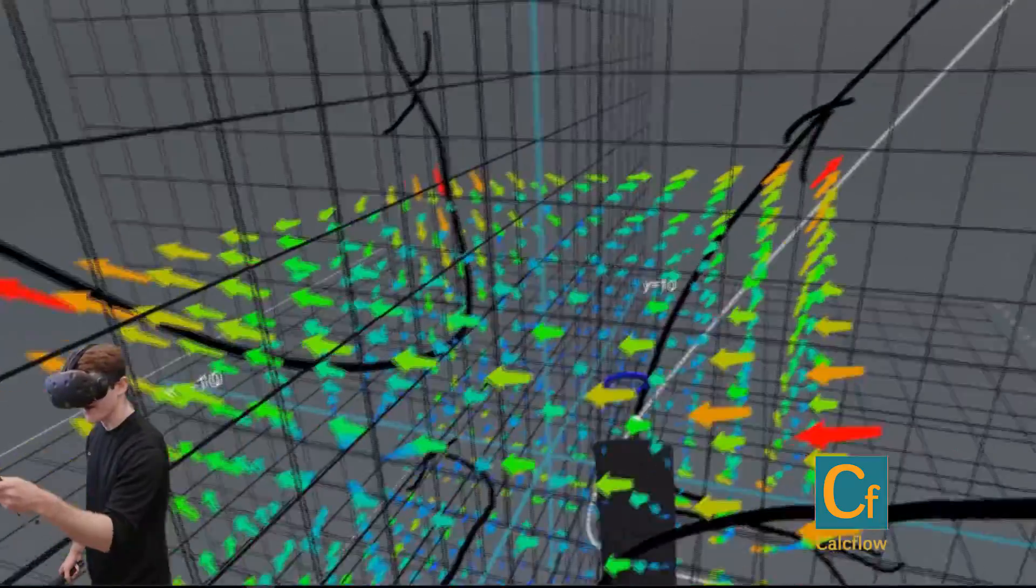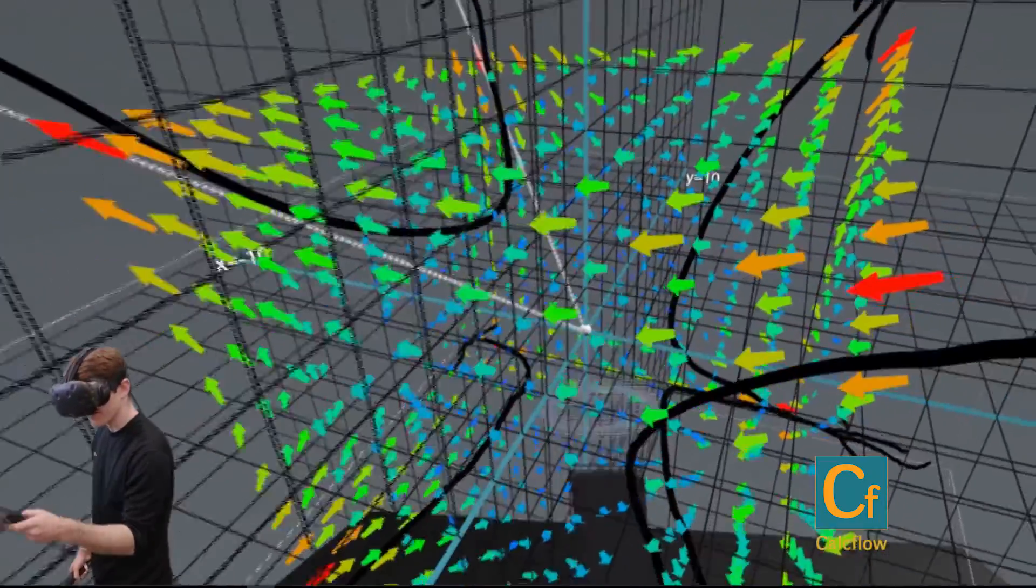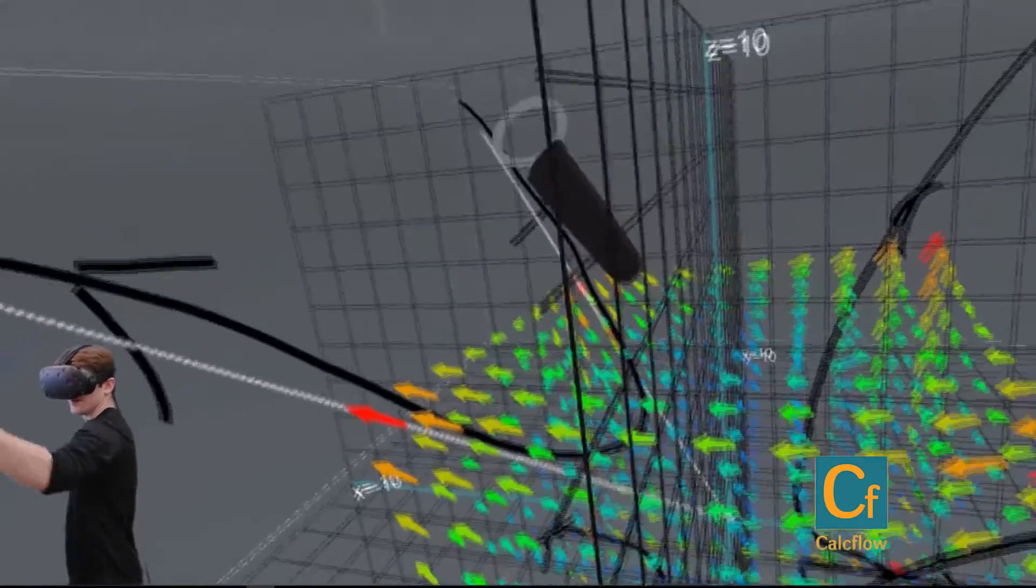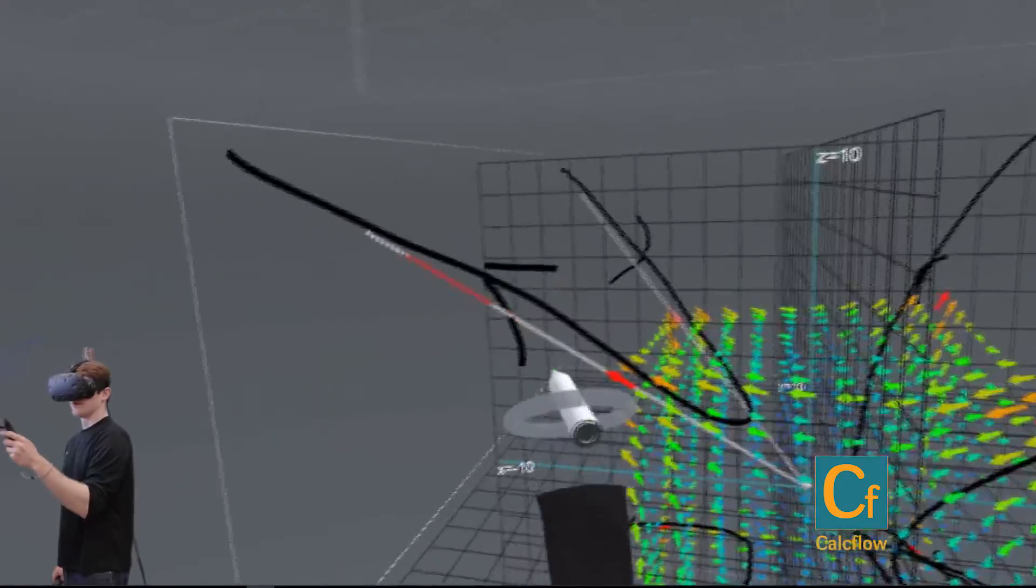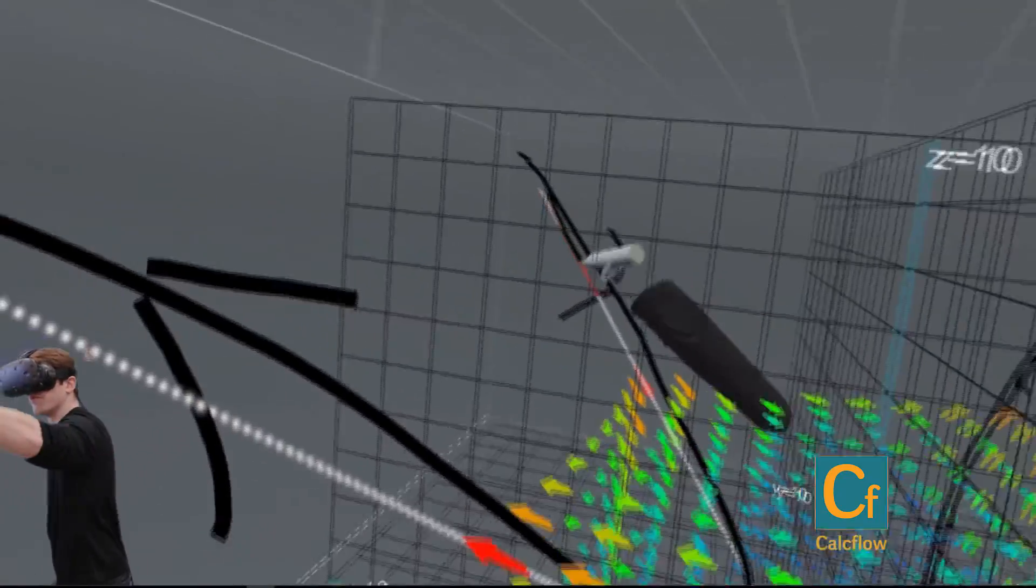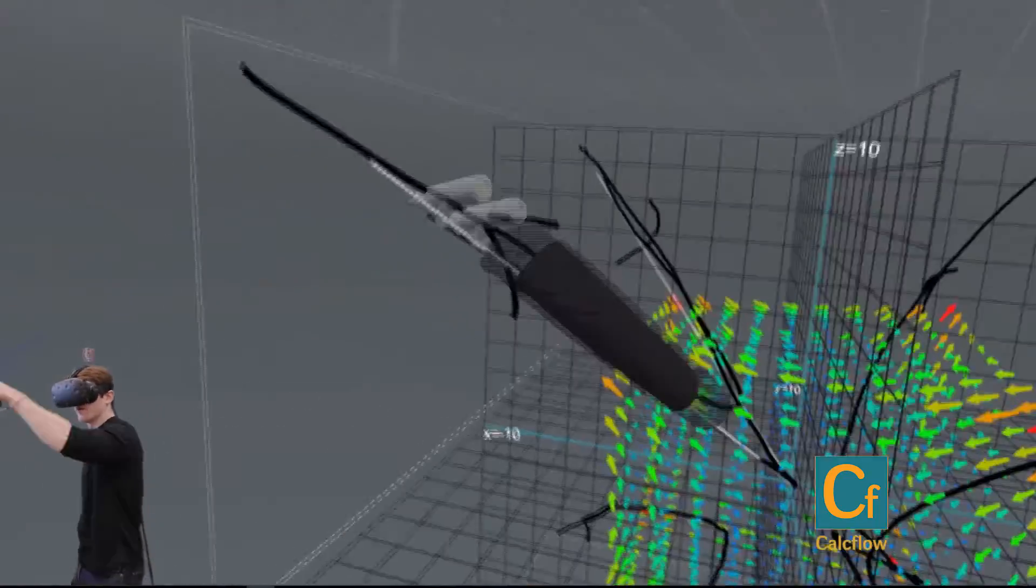So what happens if we place that point exactly at the origin. So exactly at the origin this way, we see that it goes straight in, straight out. Pretty much vertical line in, vertical line out.